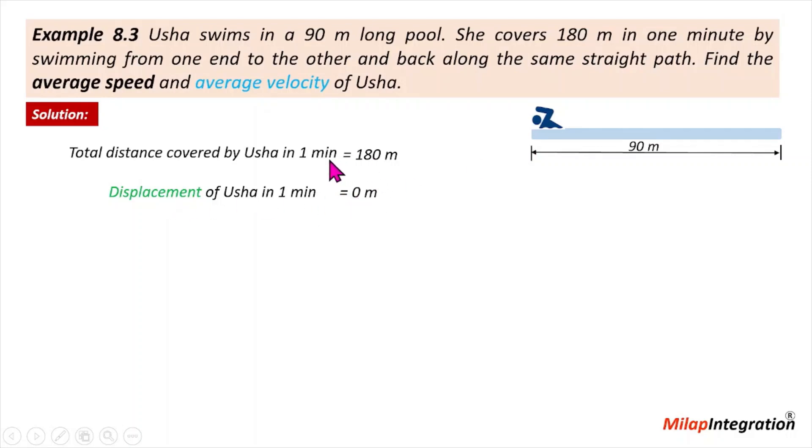Distance at time, velocity and speed. Average speed is distance upon time. As we know, we write 180 upon 60 because the unit always needs to be in standard units.